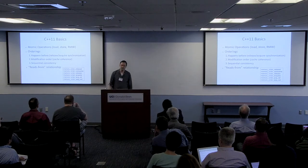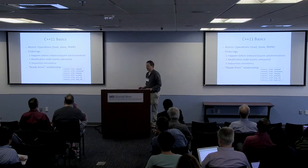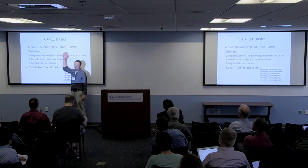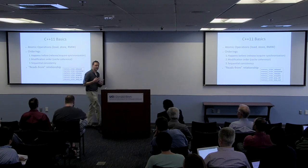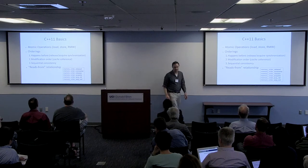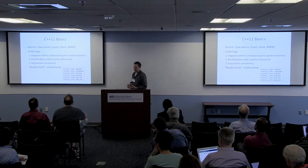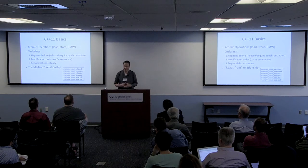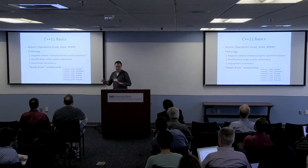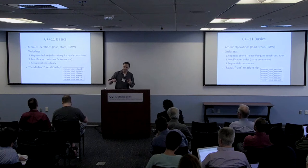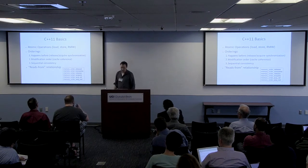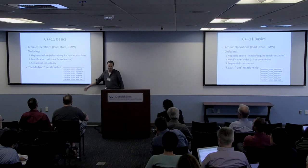The C memory model defines a set of atomic operations — things like loads from memory, stores to memory, and read-modify-write operations, which in a single instruction read from memory, do some computation, and do a write. Each of these atomic operations can declare memory ordering parameters that allow the developer to trade higher overheads in exchange for stronger guarantees. These memory orders range from the cheapest to the strongest guarantees.